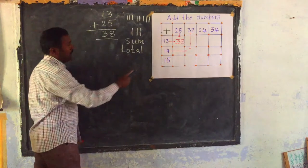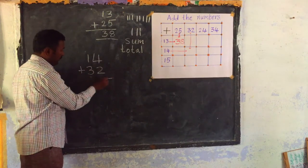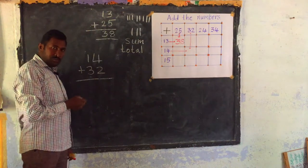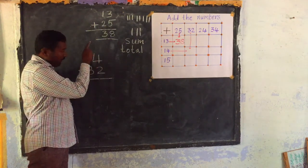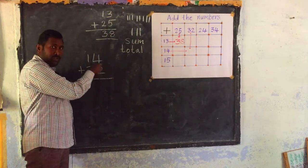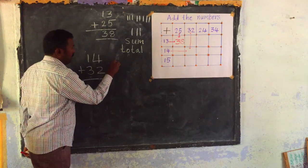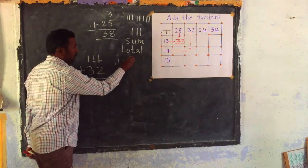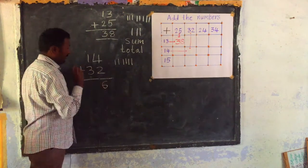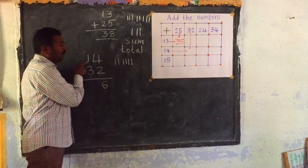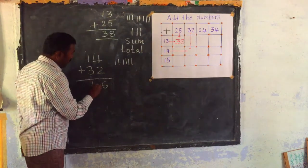I am doing 14 plus 32. I am writing 1s place digits in ones place, tens place digits in tens place. 2 and 4: 1, 2 and 1, 2, 3, 4 — total 6. Next 3 and 1: 3, 1 — how much? 4. You can say it directly; it is easy to count. So 46.